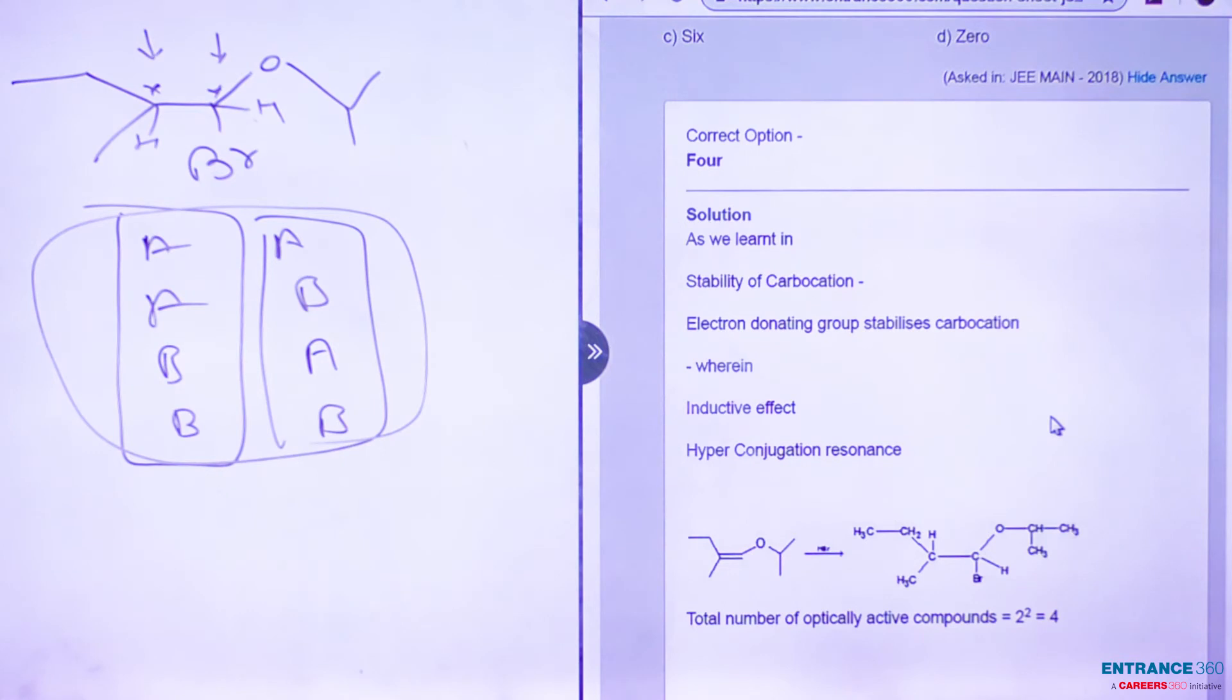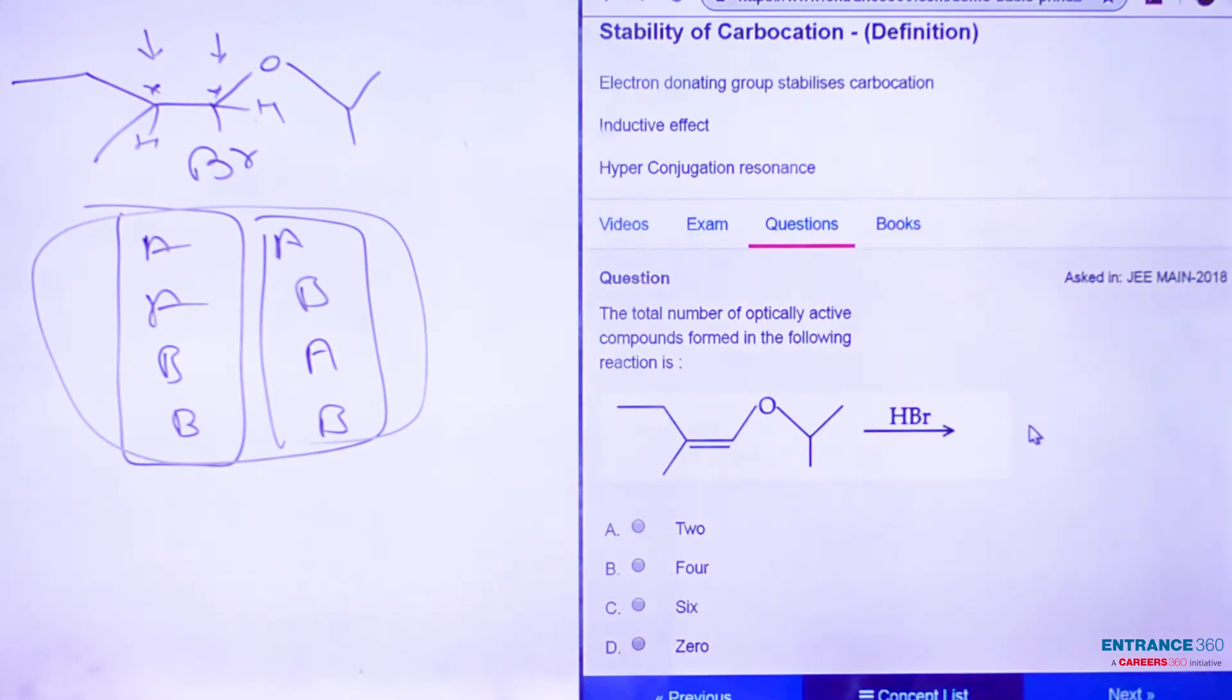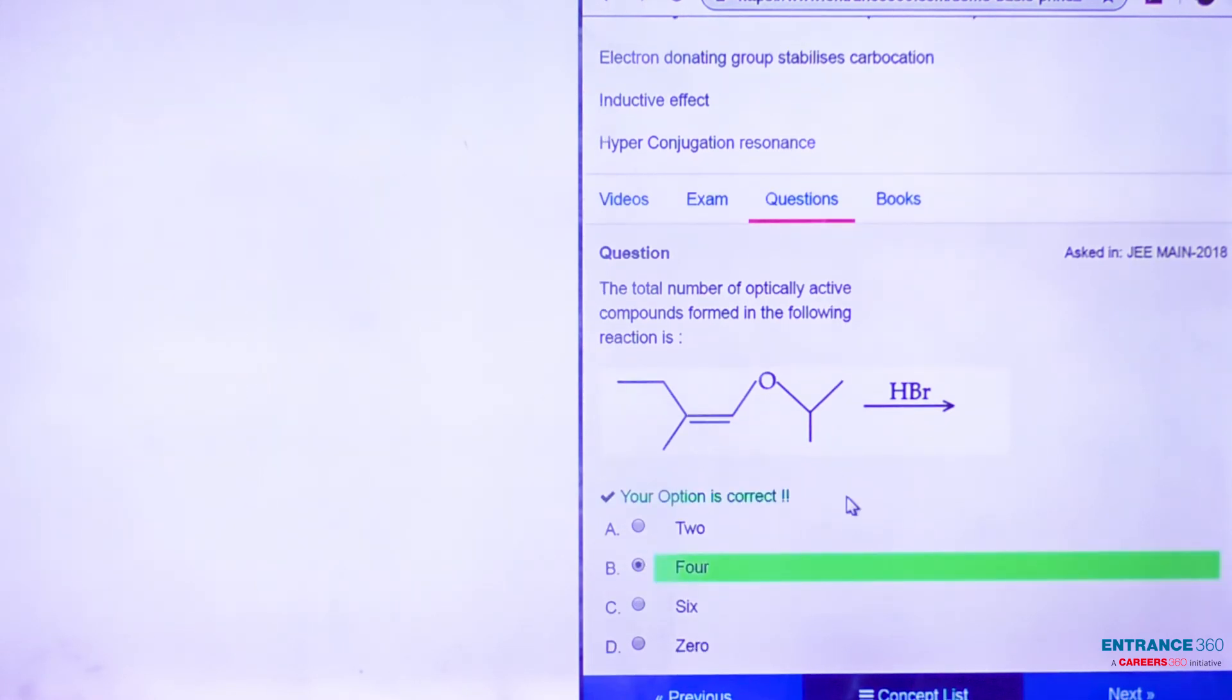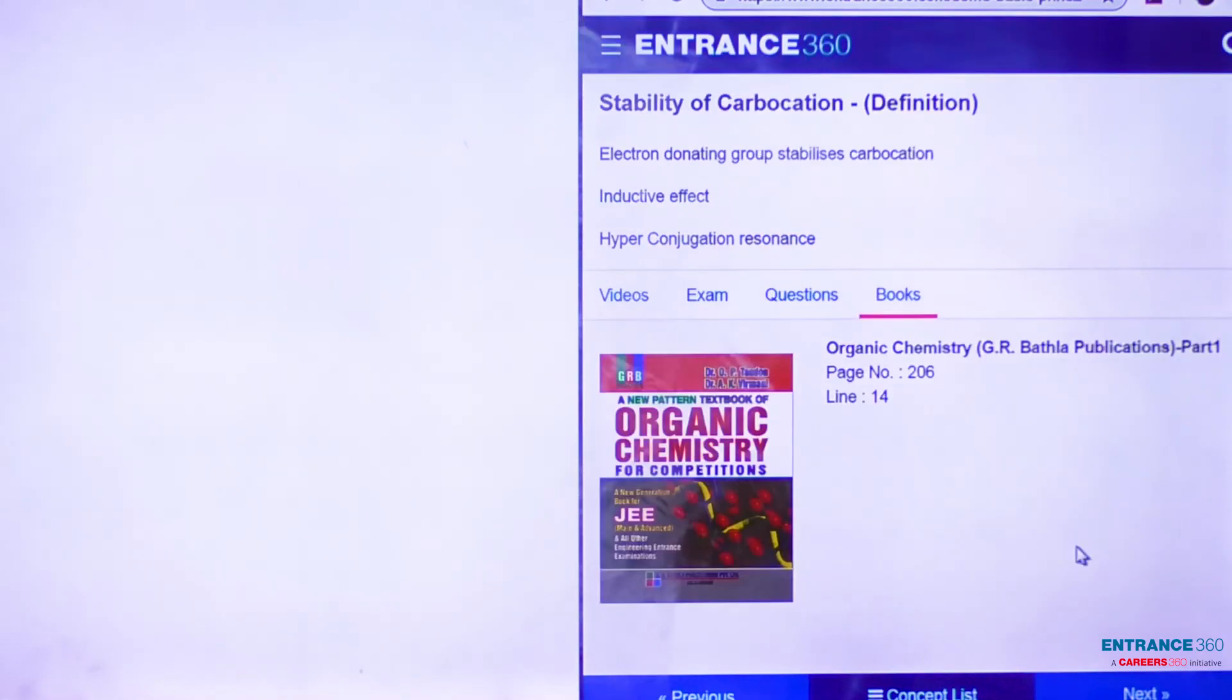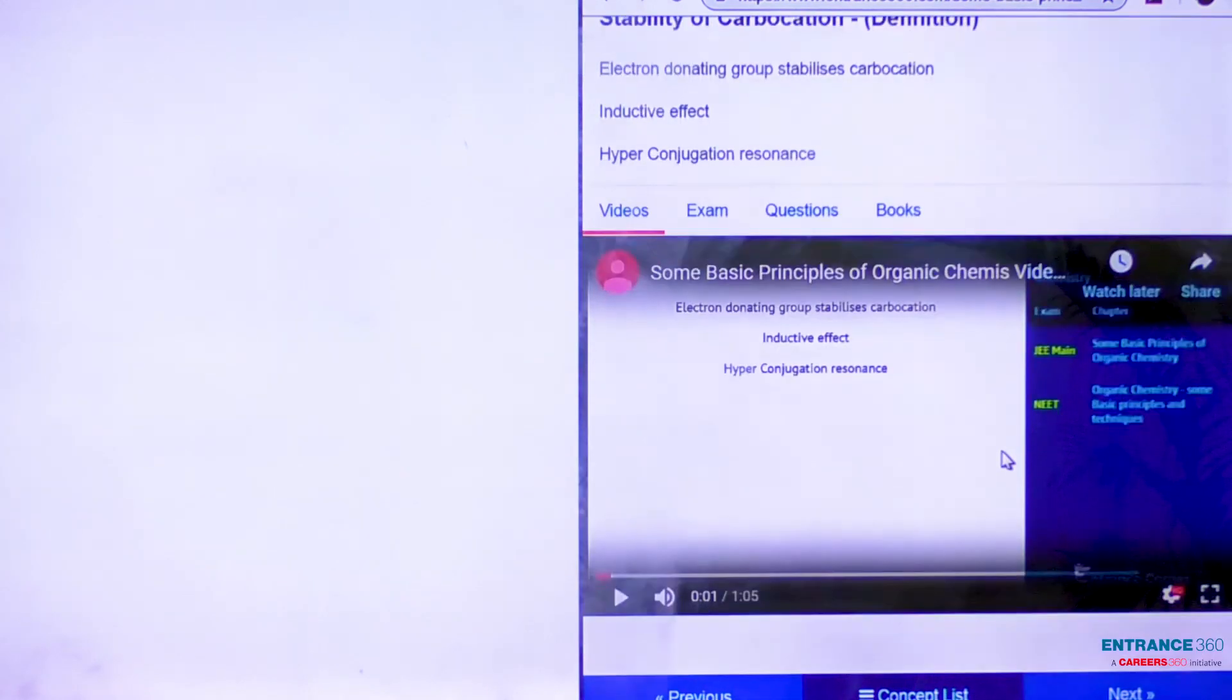So our answer is going to be four, and the correct option is B. To learn more about this concept, you can watch the video which is around one minute, and you can also go through the books of organic chemistry, GR publication part one. This concept is on page number 206, line number 14. I hope this video was very helpful to you. Thank you very much, students.